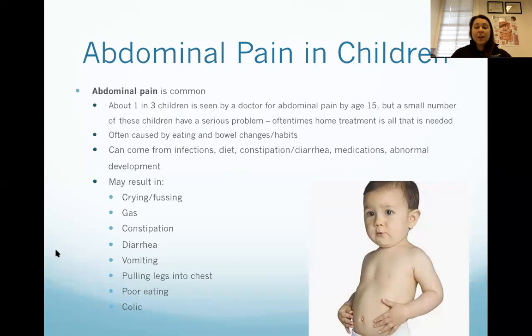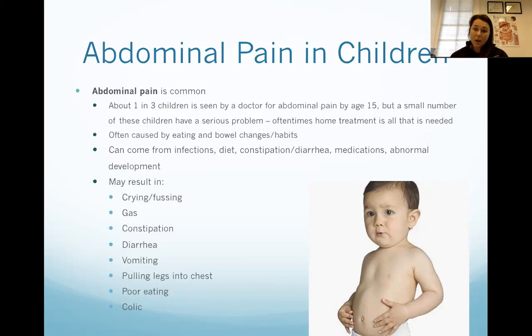This pain in kids is a little bit different than in adults. Adults can just say 'my stomach hurts,' but kids can manifest their pain by crying, having gas, constipation, diarrhea, vomiting, pulling their legs into their chest, poor eating, or being colicky. Abdominal pain is often very frightening and frustrating for parents because kids can't really say 'mom, my tummy hurts.' So it can be difficult to find the cause.